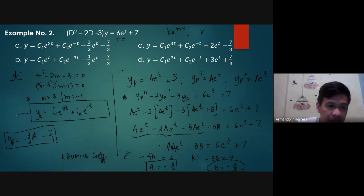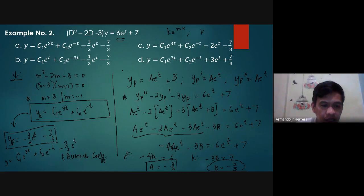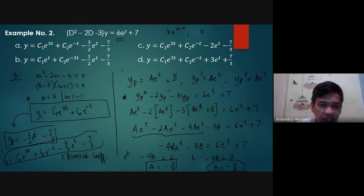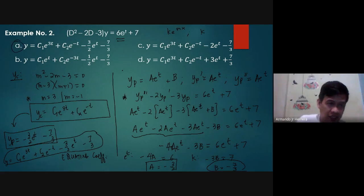Adding yc and yp gives the general solution: y equals c1e to the 3t plus c2e to the negative t minus 3 halves times e to the t minus 7 thirds. This is the general solution to the given differential equation, and that is letter A.